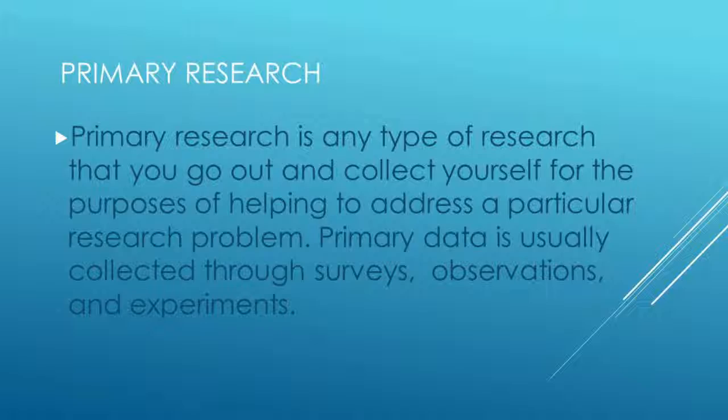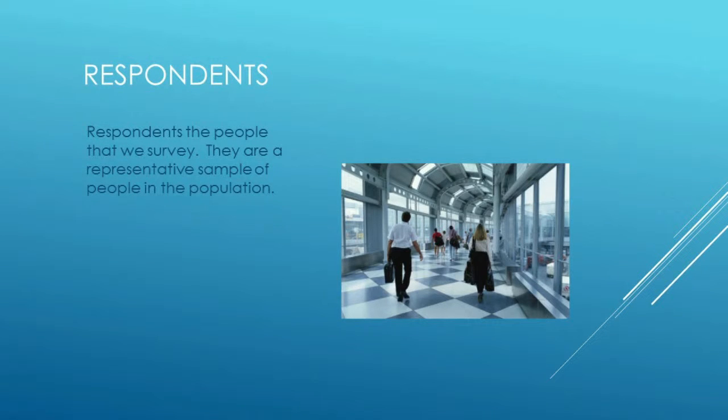As I've already mentioned, primary research is research that's conducted specifically for the research question that we are addressing right now. Formally, primary research is any type of research that you go out and collect yourself for the purposes of helping to address a particular research problem. So primary data is usually collected through surveys, observations, and experiments. Surveys involve going and asking people — we call them respondents — what they think of something or what they know about something. A survey goes out and asks a portion of the population, and this portion should be what we call a representative sample.